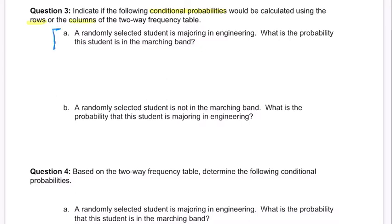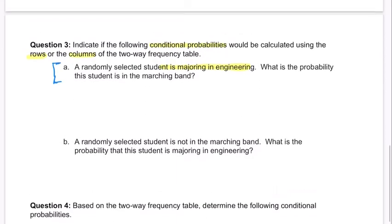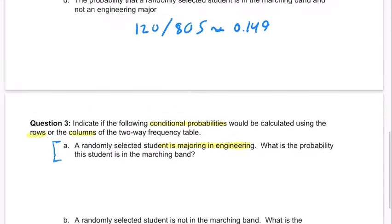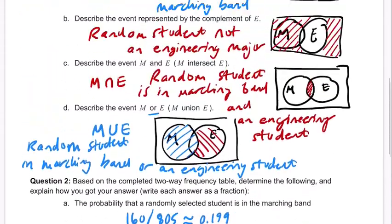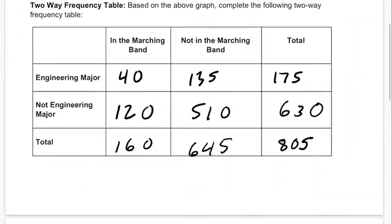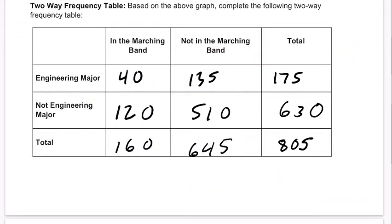So in the first one here, it says a randomly selected student is majoring in engineering, and that is our condition. We know they're majoring in engineering — that's going to change our probability. What is the probability that the student is in marching band? We know they're in engineering, so we're now restricted to that row.